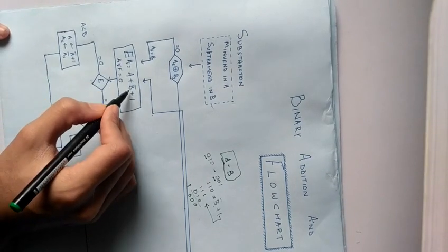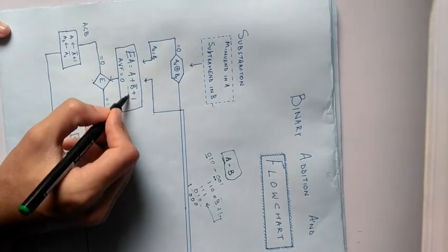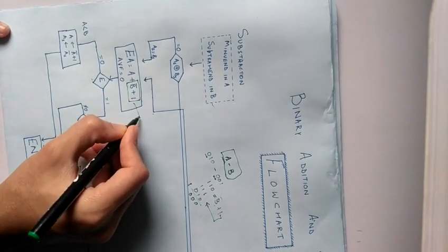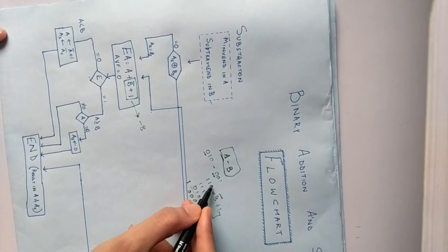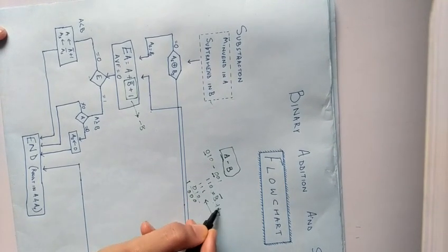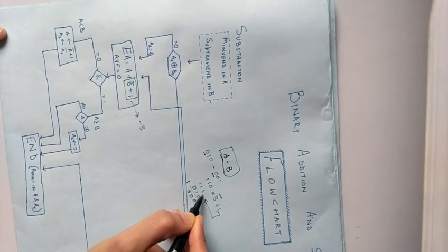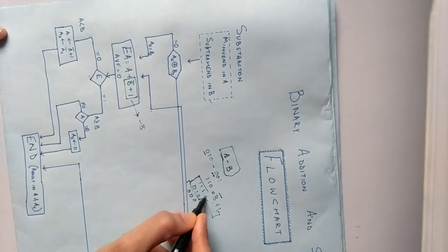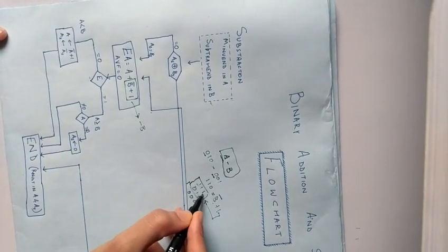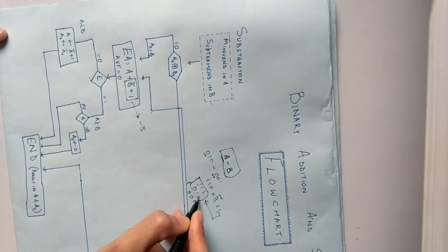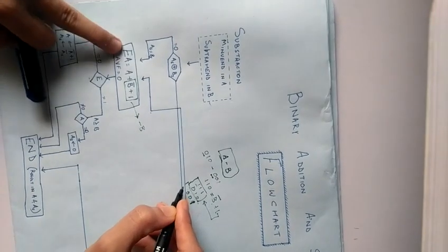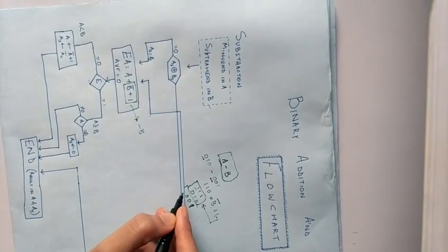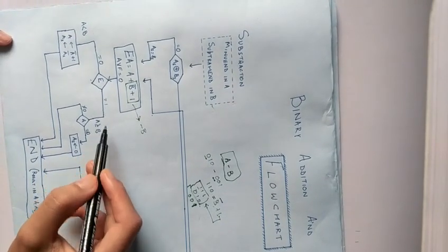Now, first of all, we'll add a to the b complement plus 1. So basically, this part is nothing but the negative of b. This would be equal to minus b. So then b bar would be basically the inversion of the binary digits. So it would be 110 and if we add 1 to it, we'll have 111. And now we have to add both these because a plus b bar plus 1. So this is b bar plus 1 and this is a 010. So when we add it, we'll have 010 like 100 and we'll have 1 in e. e basically have the carry part. So since e is equal to 1, so we'll move to this part.